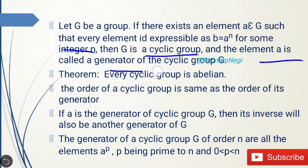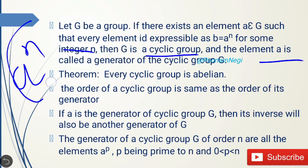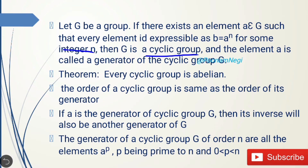The element a is called the generator of a cyclic group. This means if you are given a group and the elements of that group are expressible in the form of aⁿ where n is any integer, then G will be a cyclic group and this element a will be called the generator of that cyclic group.